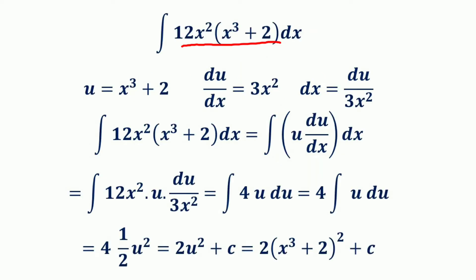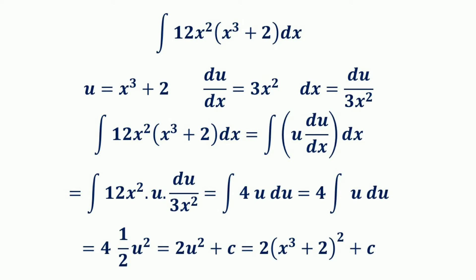Consider the following numerical example: the function is 12x² · (x³ + 2). We are going to integrate this function using the integration by substitution method. So we have the integral of 12x² · (x³ + 2) dx. Here the integrand can be converted into a product of another function u and its derivative du/dx times a constant multiple.